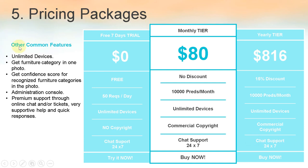Pricing packages. Common features include: unlimited devices, get furniture category in one photo, get confidence score for recognized furniture categories, administration console, and premium support through online chat and tickets with very quick responses. For the 7-day free trial you get 50 daily requests with no commercial copyright. For monthly and yearly tiers you get 10,000 predictions per month with commercial copyright. The monthly tier is $80 USD, and the yearly tier is $816 USD with a 15% discount included.